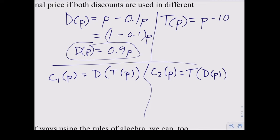Notice the way it's written - we start on the inside with composite functions. C1 is D(T(p)), so T(p) is on the inside, meaning we take the ten dollars off first and then apply the ten percent discount. C2 has D(p) on the inside, so that's the ten percent discount first, then ten dollars off. You all claimed C2 should be cheaper - let's verify.